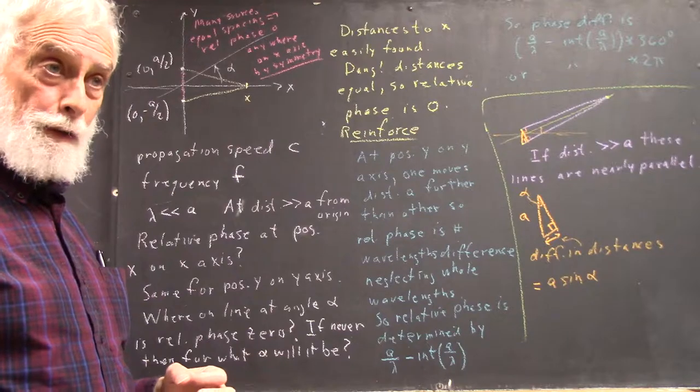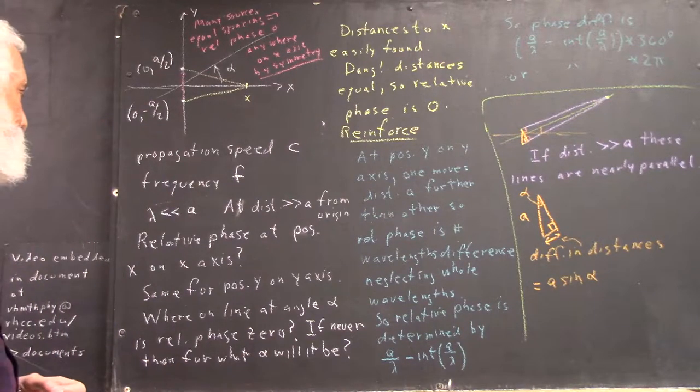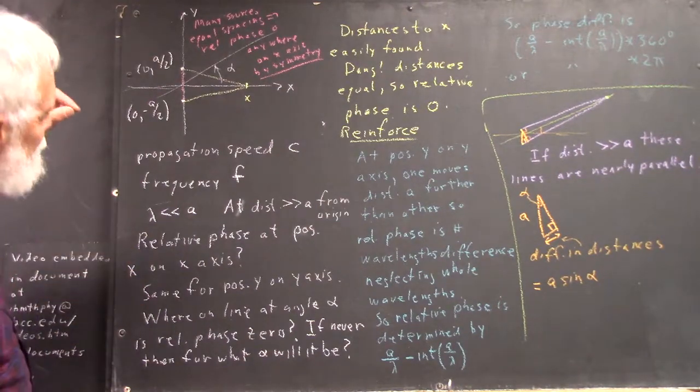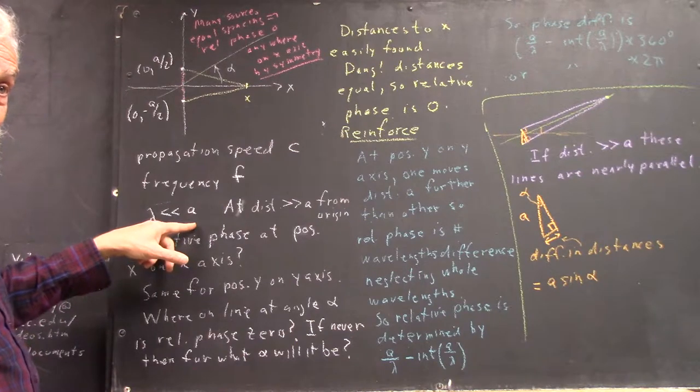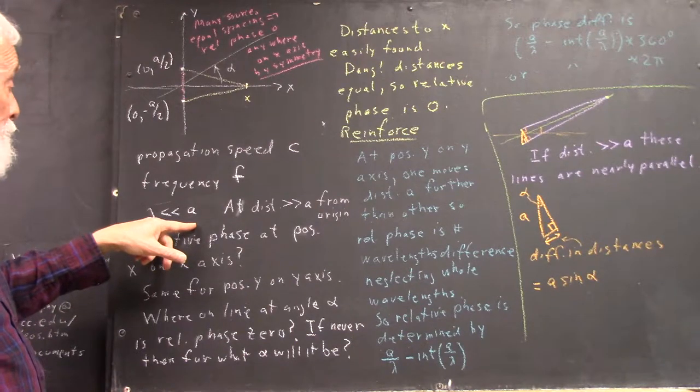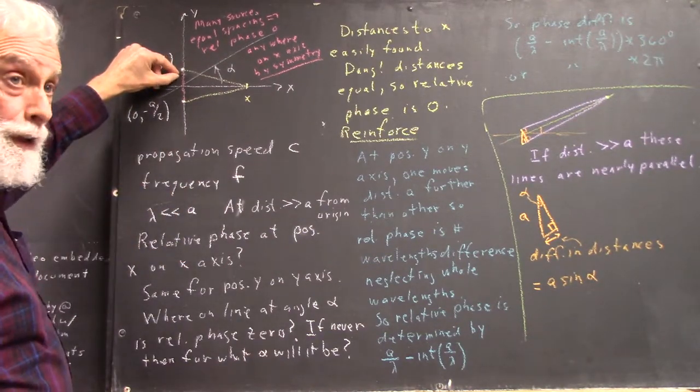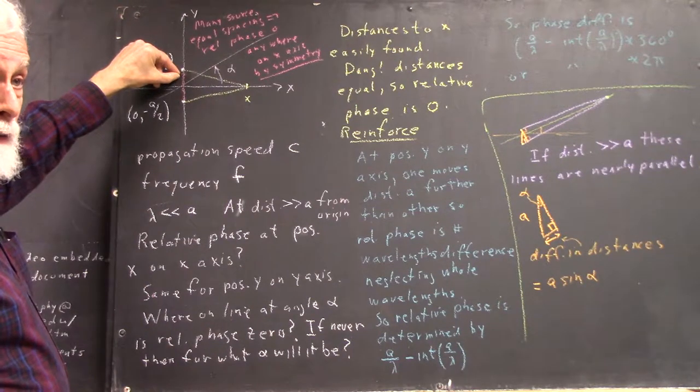Another way to look at it is simply that lambda is a whole lot less than A. Within a distance lambda along here, tiny lambda, you have all the phases from 0 to 360.